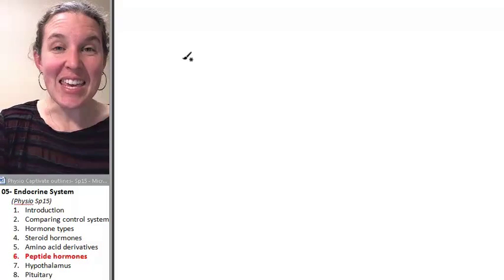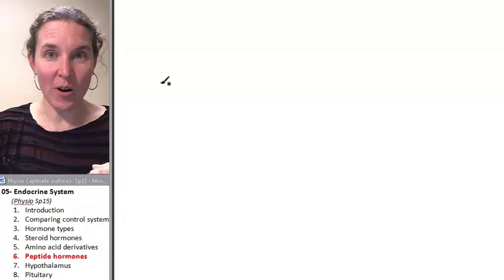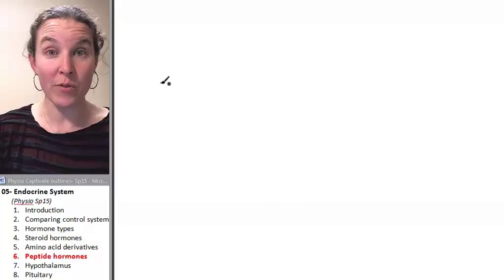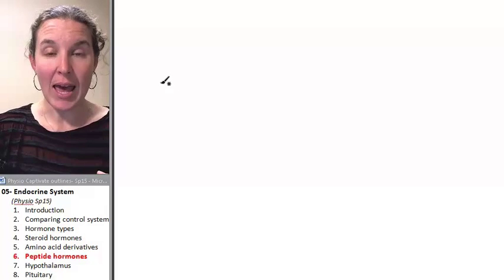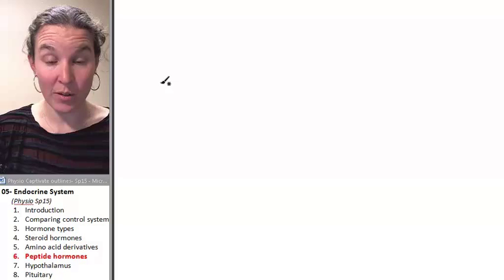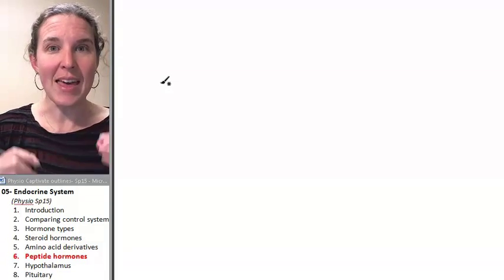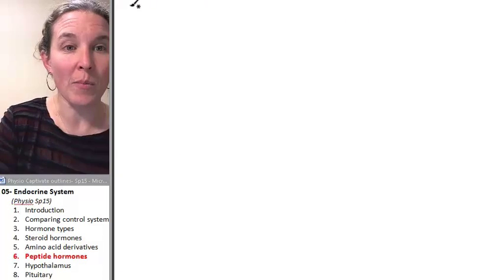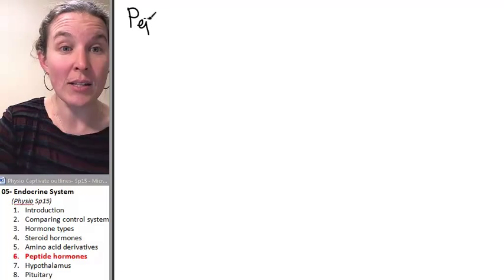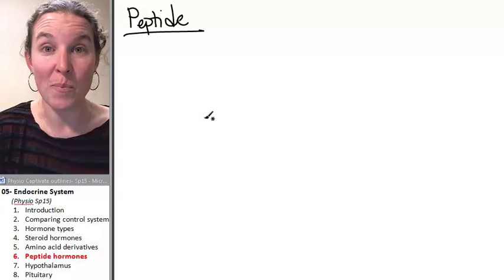If a hormone is not a steroid hormone, so it's not derived from cholesterol, and it's not an amino acid hormone, so it's not derived from tryptophan or tyrosine, then it must be a peptide hormone. And that truly is the process of elimination. Everything else are peptide hormones.